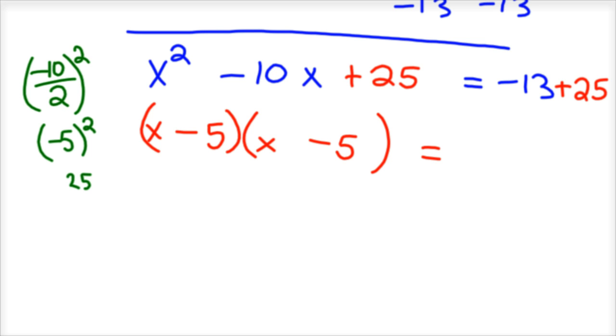And you go ahead and add 13 and 25. So we'd have 12, I do believe, there. And so we factored this x minus 5, x minus 5 equals 12. Well, x minus 5 times x minus 5 is x minus 5 squared. That's the square part of this. We're completing the binomial from before to make a square trinomial.